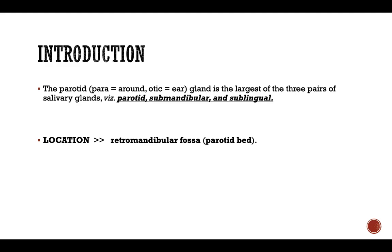The parotid gland is the largest of the three salivary glands. It is an exocrine gland which secretes saliva. The three salivary glands are the parotid gland, the submandibular gland which lies below the mandible, and the sublingual gland which lies below the tongue. The parotid gland is located in a region called the retromandibular fossa — retro meaning behind, mandible, and fossa meaning space. This retromandibular fossa is also called the parotid bed.